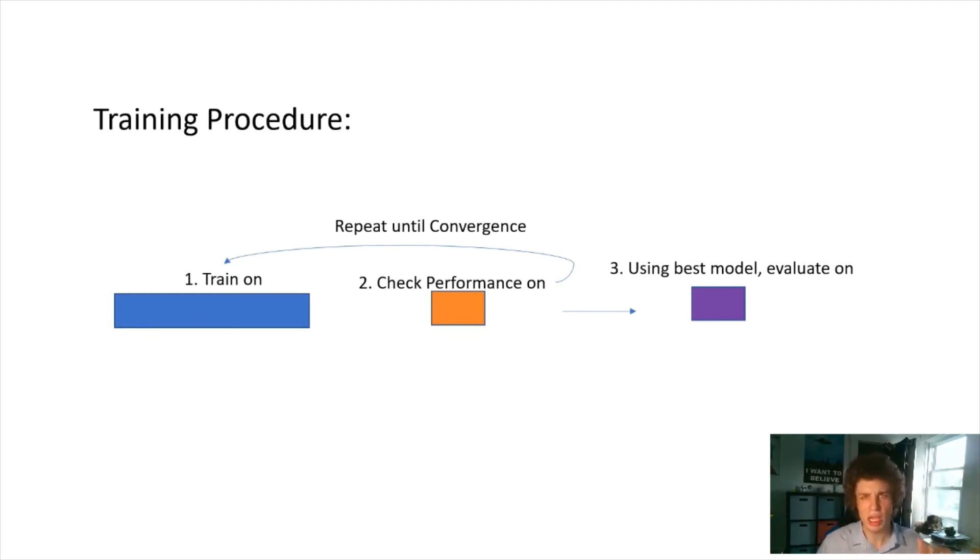Here's a simple training procedure like for a neural network. You train on a smaller subset of data, check your performance on validation data, and repeat training and checking until you converge or your model stops training. At the end, you have a bunch of models created for each time point based on the validation set. You take the best one and apply it to your testing set to get your final model.